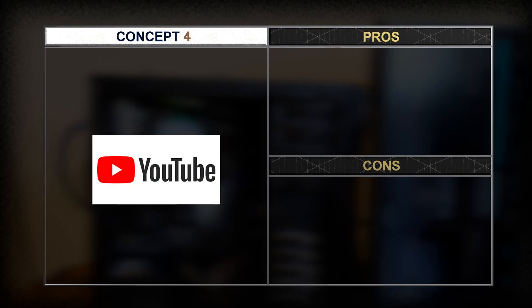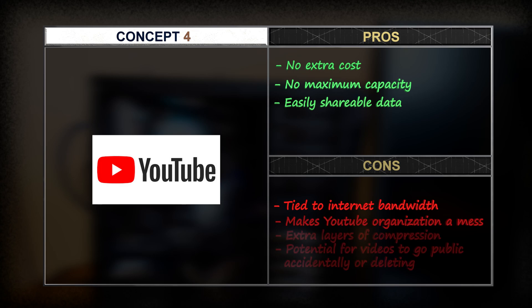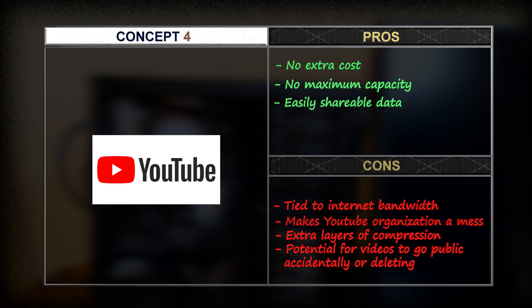Uploading videos to YouTube just for storage is apparently not uncommon for individuals with personal videos. Pros include no extra cost, no max capacity, and easy shareability. However, like cloud storage, it's limited to available internet bandwidth. Since I intend to be a YouTube creator, this would make my channel an organizational mess with the potential to accidentally make raw video snippets public. It would also result in multiple levels of compression, making videos far less visually appealing. With all these pros and cons considered, I've chosen to build a NAS along with purchasing some cloud storage.